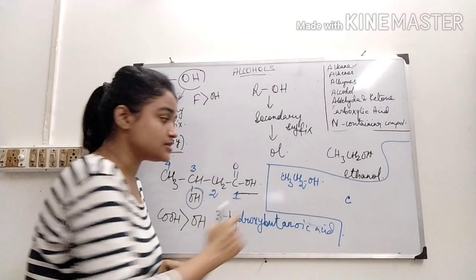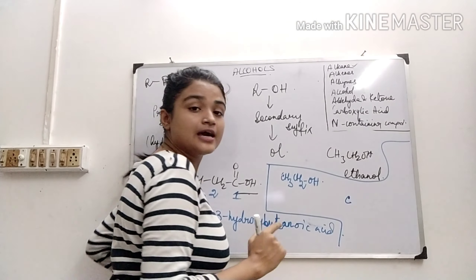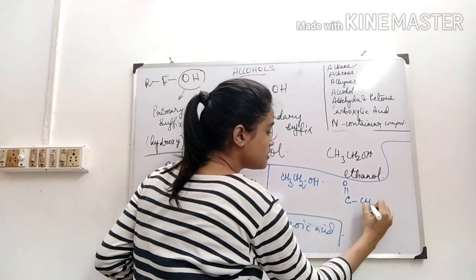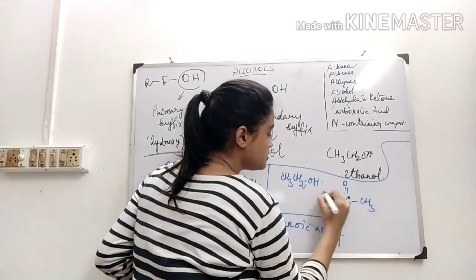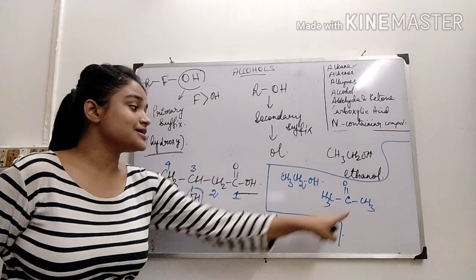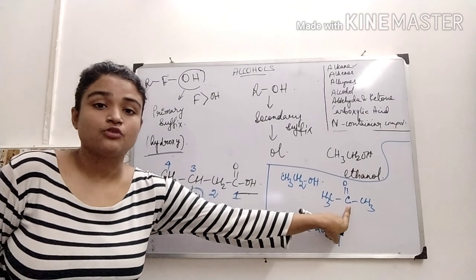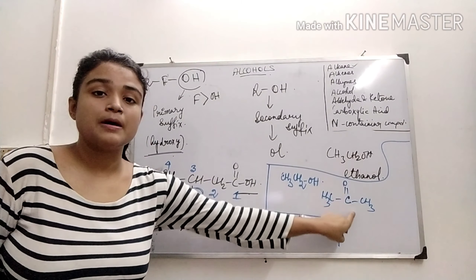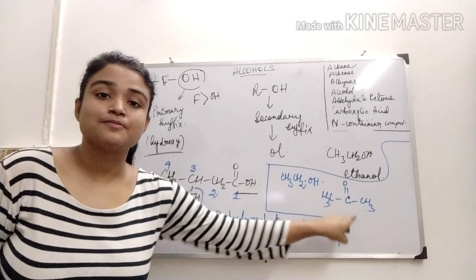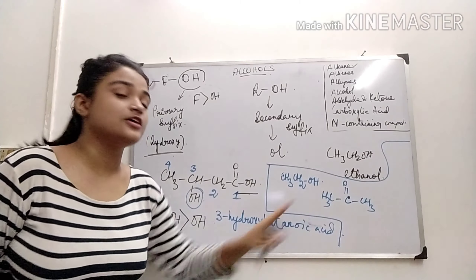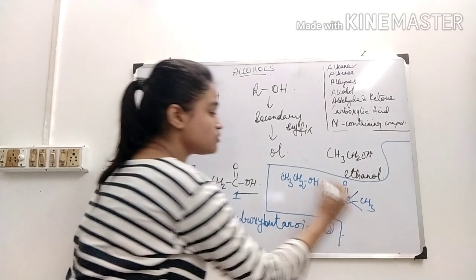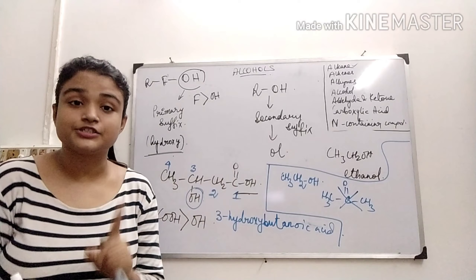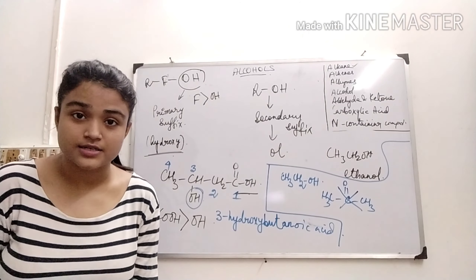Suppose if I want to make ketones out of ethanol. This is the simplest ketone — the first member of the ketone family. So ketone and alcohol, they are not functional isomers.